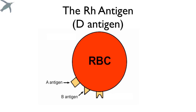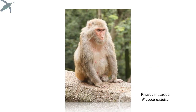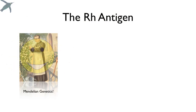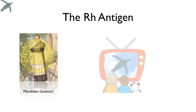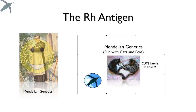All we have left is the RH antigen, sometimes called the D antigen. This one's going to be really easy because it's inherited in Mendelian fashion. By the way, it's named for the rhesus macaque in which a lot of early studies were done.